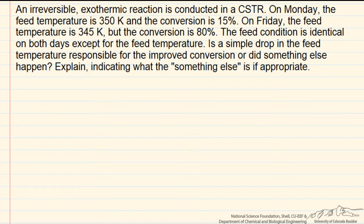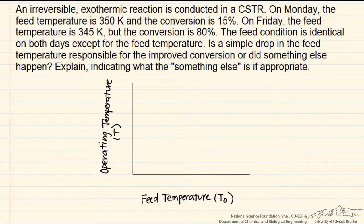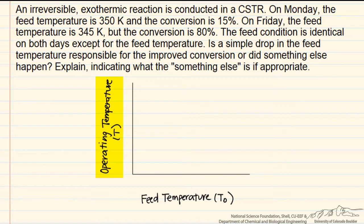If we remember that we can have an ignition-extinction curve, where we have the feed temperature T0 on one axis and the actual operating temperature of the CSTR on the other, we can have a region where we're operating at a lower steady-state temperature. Then we have an ignition at a certain point to a higher temperature and higher conversion. Above that temperature, when we have multiple steady states, we would have a higher temperature steady state and higher conversion.